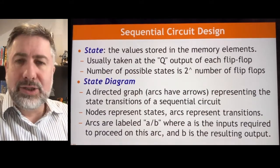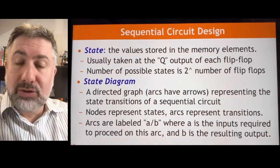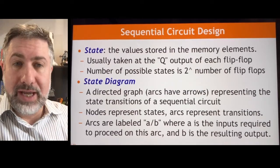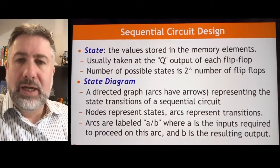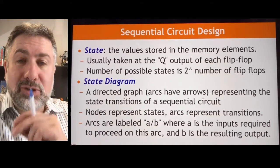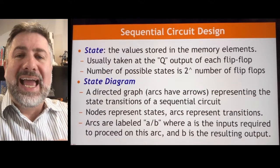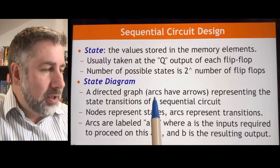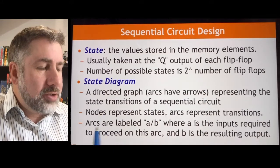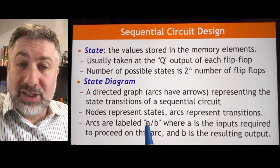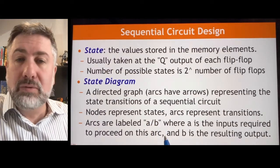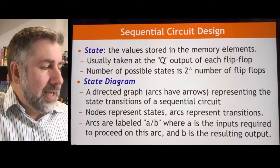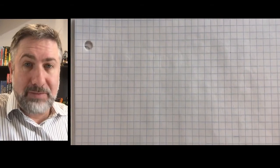The state diagram is going to show you what states are available and how you can get from one state to the next. It is a directed graph with each possible set of state variables being the nodes in the graph, and the transitions to get from one state to another being directed arcs between these states. The arcs are going to be labeled with the inputs that cause that transition and any outputs that will result from that transition. Let's look at an example — the simplest state machine we can build, which is just the flip-flops we've already built.